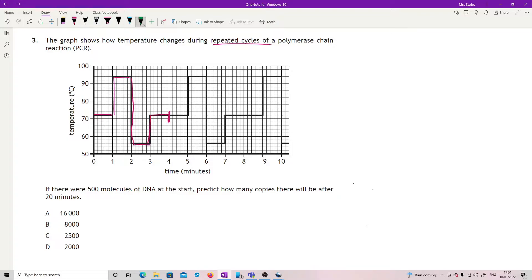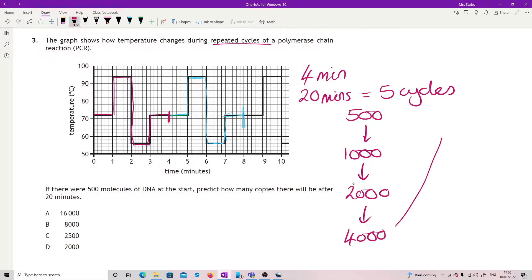So every four minutes is one cycle. You were asked what happens after 20 minutes, so 20 minutes would be five cycles because each one's four minutes. I start at 500, after one cycle 1000, two cycles, three cycles, four cycles, and five cycles. So 16,000.